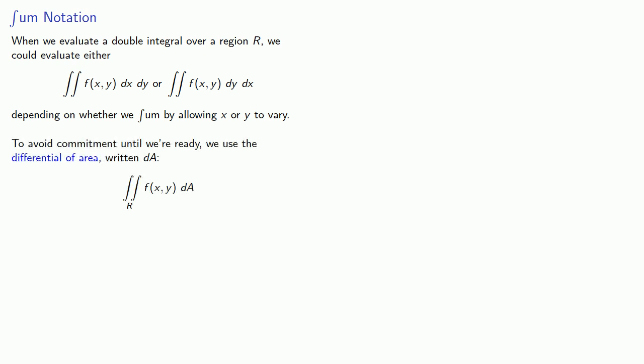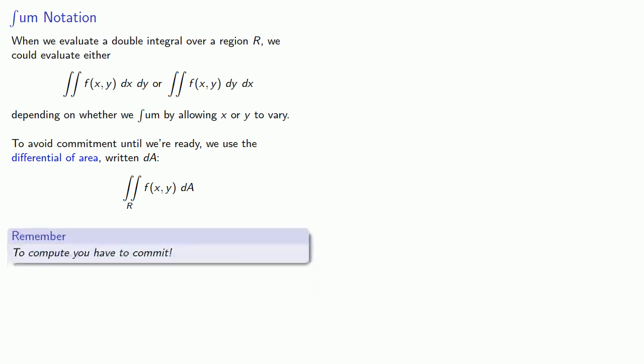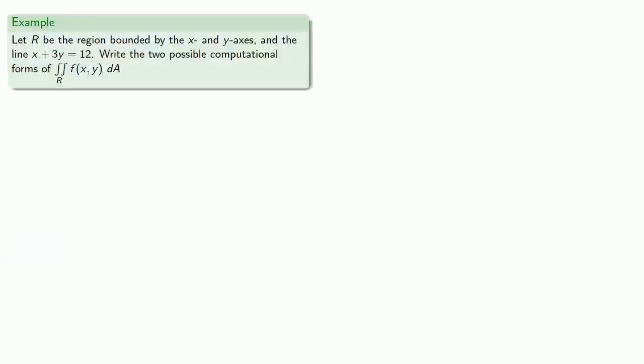But remember, to compute, you have to commit. For example, let R be the region bounded by the x and y axes and the line x plus 3y equals 12, and let's write two possible computational forms of this double integral.